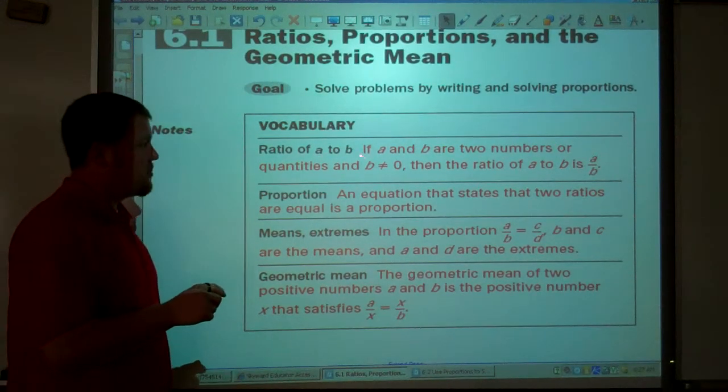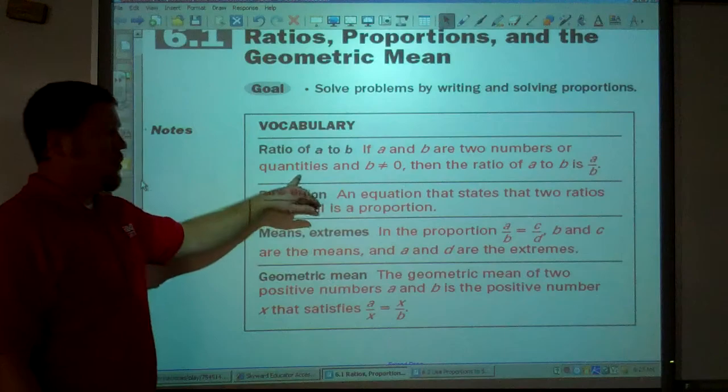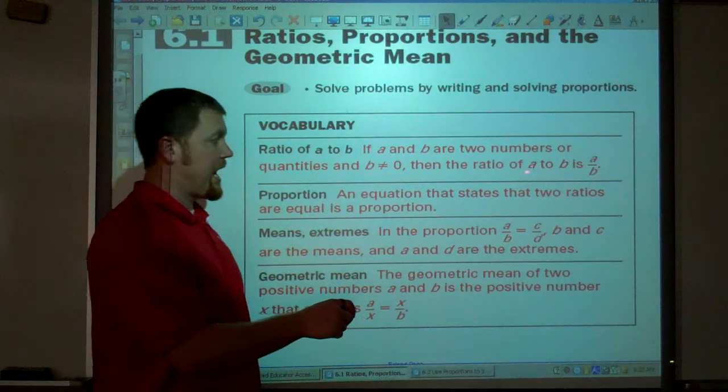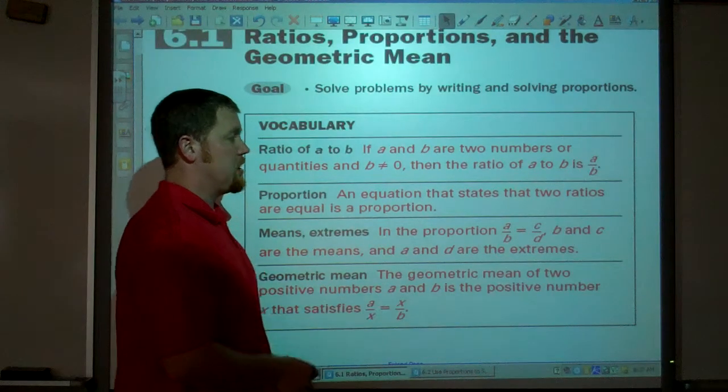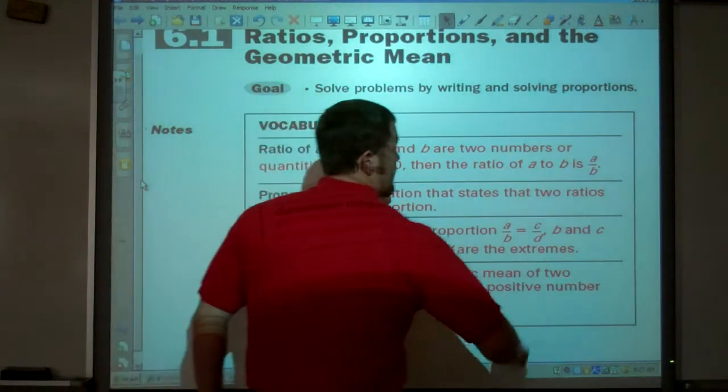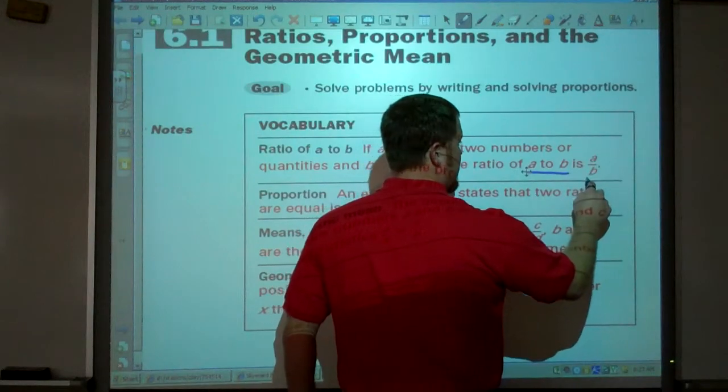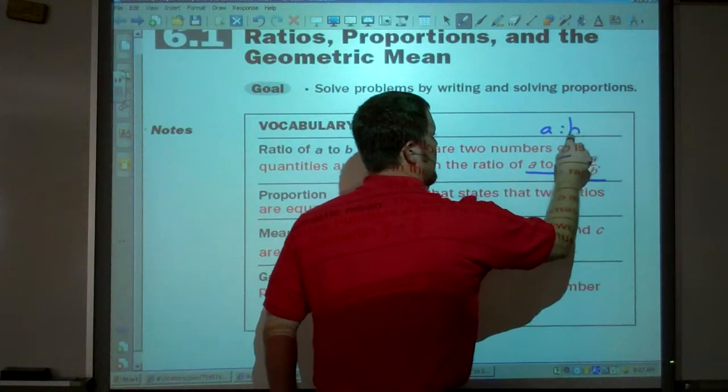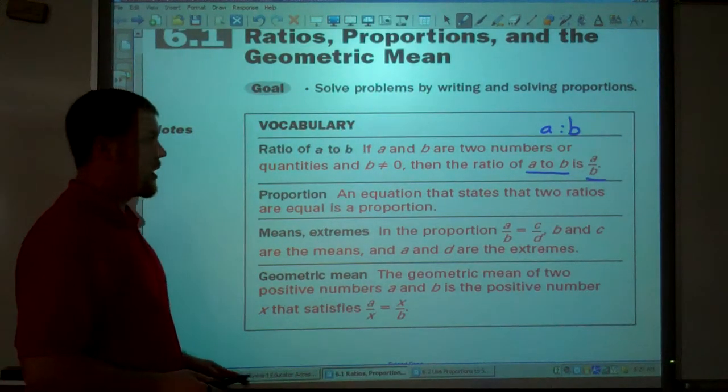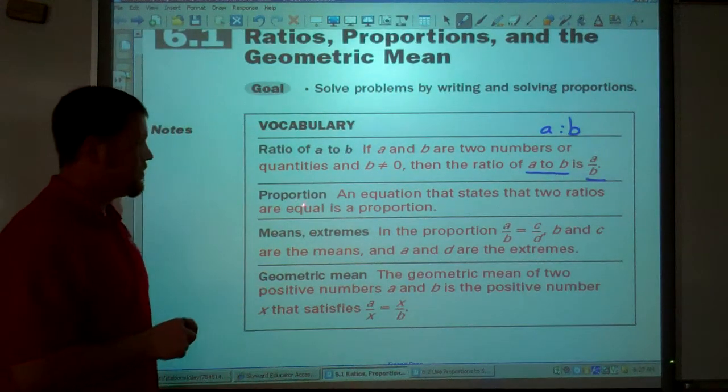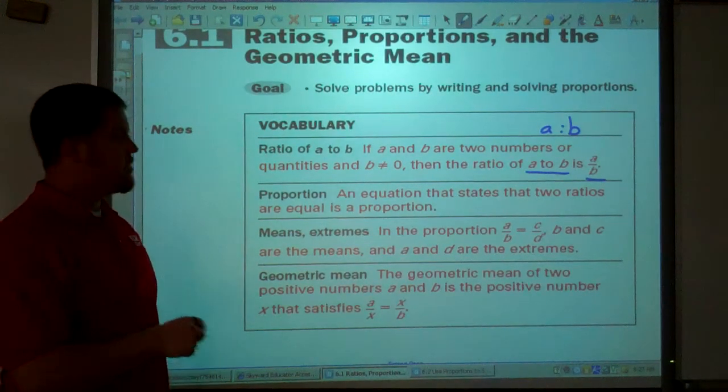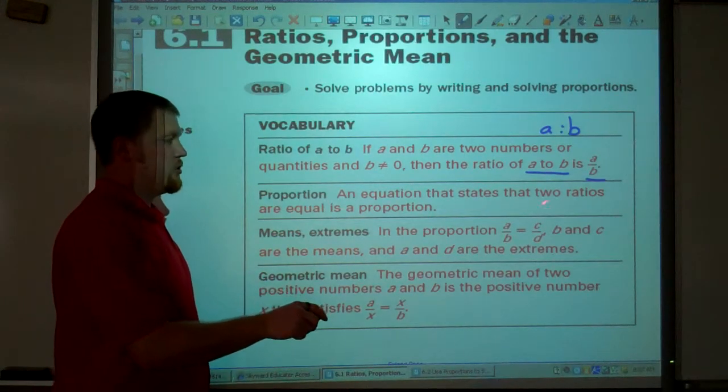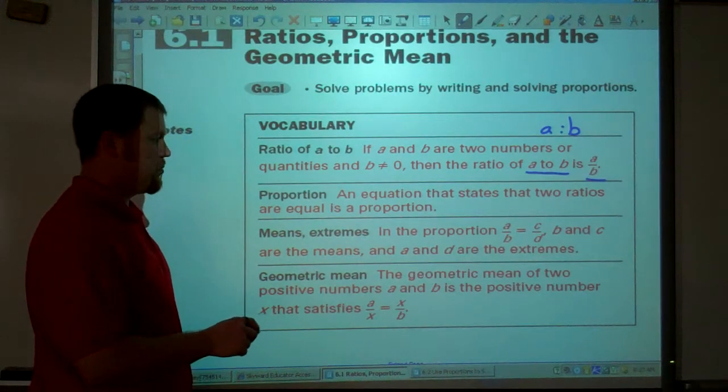Today, ratio of A to B. If A and B are two numbers, or quantities, and B cannot be zero, then the ratio of A to B is A to B. You can write it like this, A to B. You can write it like this as a fraction. You can write it with a semicolon. They all mean the same thing, A to B. A proportion is an equation that states two ratios are equal. That's what a proportion is. Two ratios that are equal.